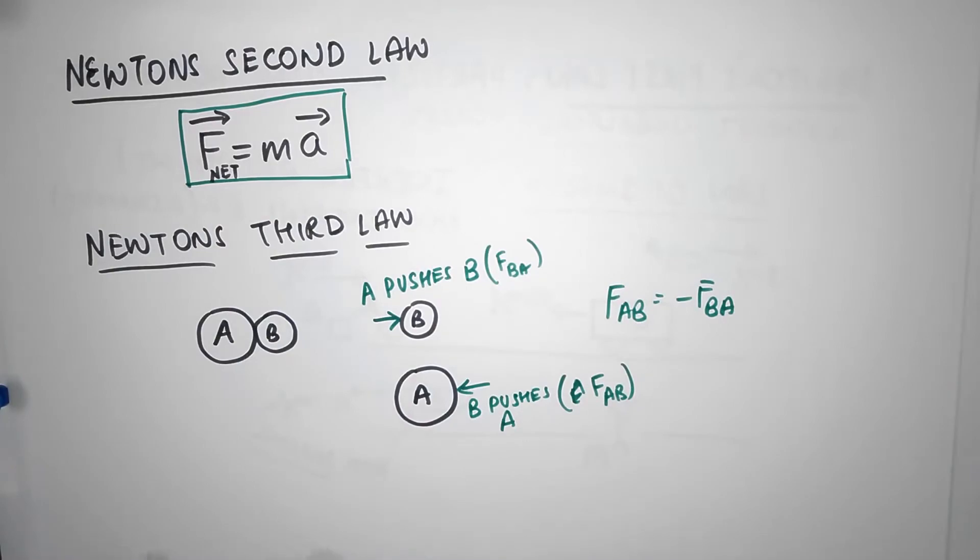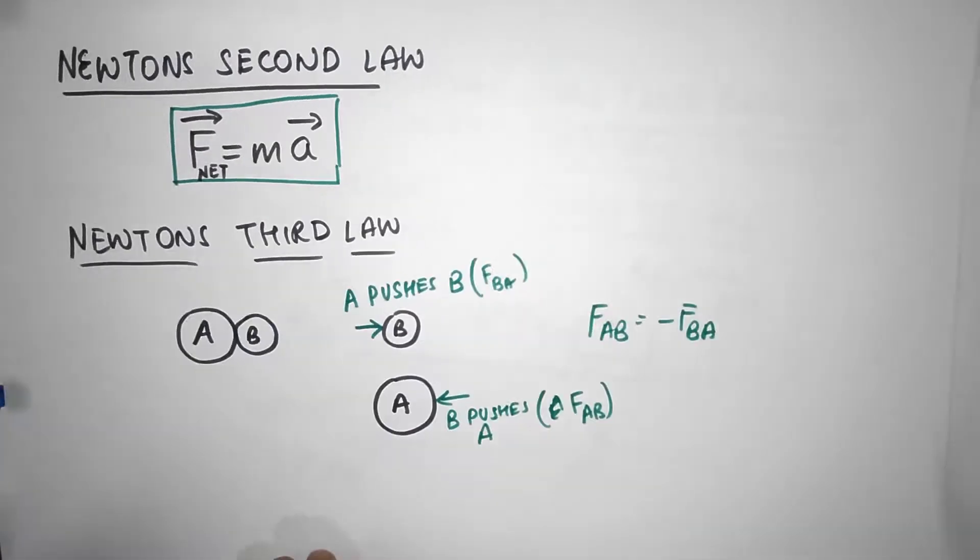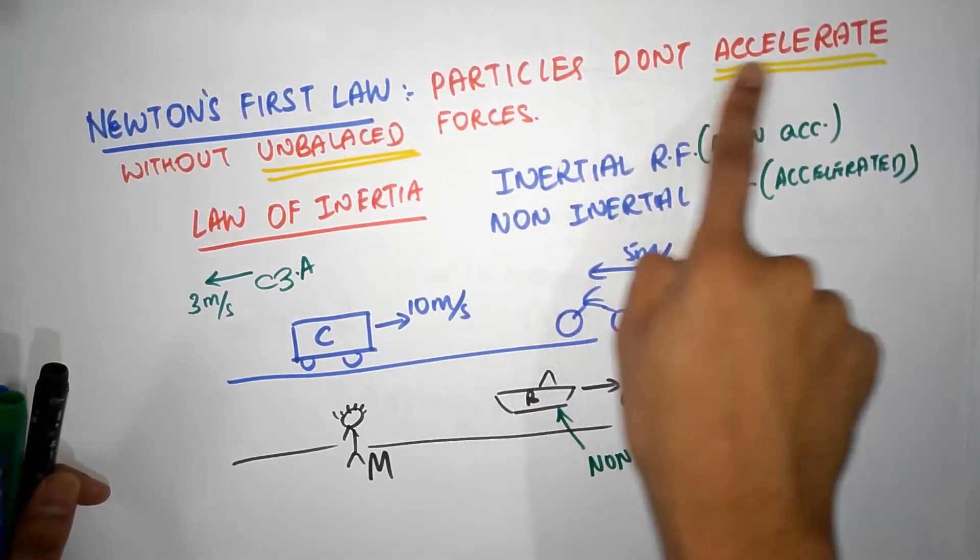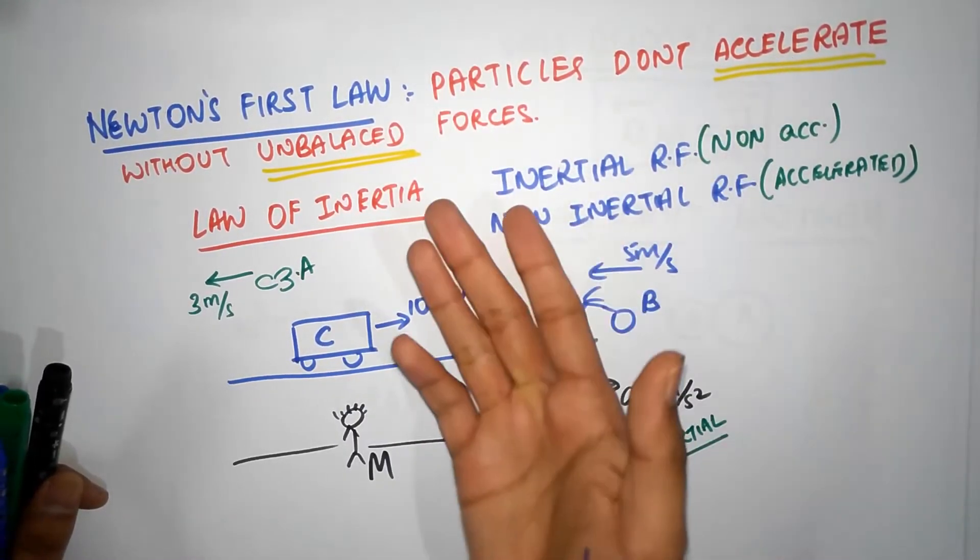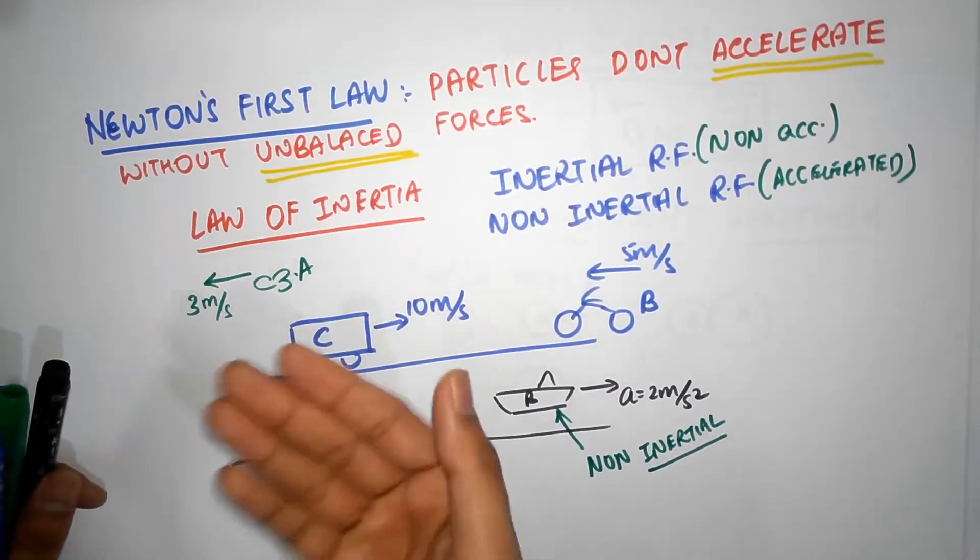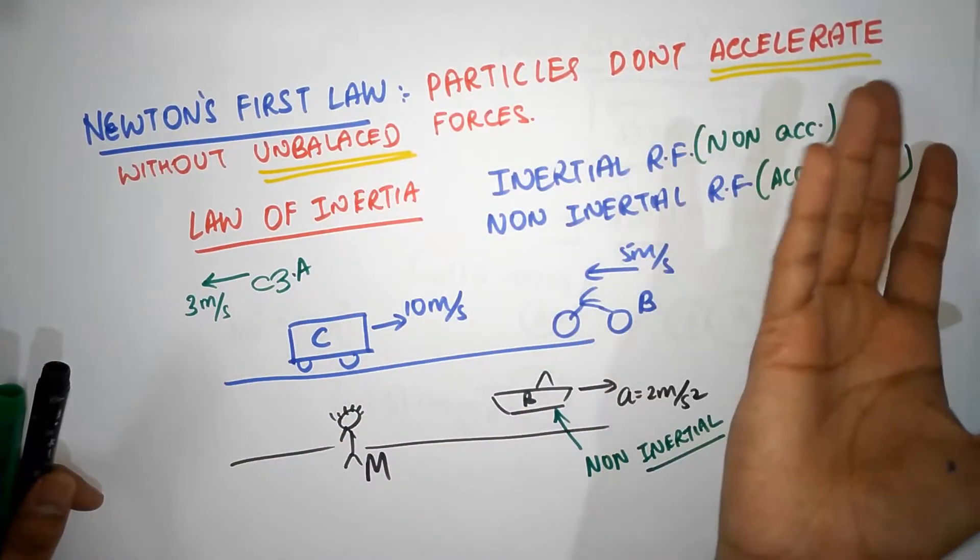Last time I told you that if there are no unbalanced forces acting, particles don't accelerate. So the obvious conclusion from this is if there is an unbalanced force, that means there is a net force, then particles must accelerate.